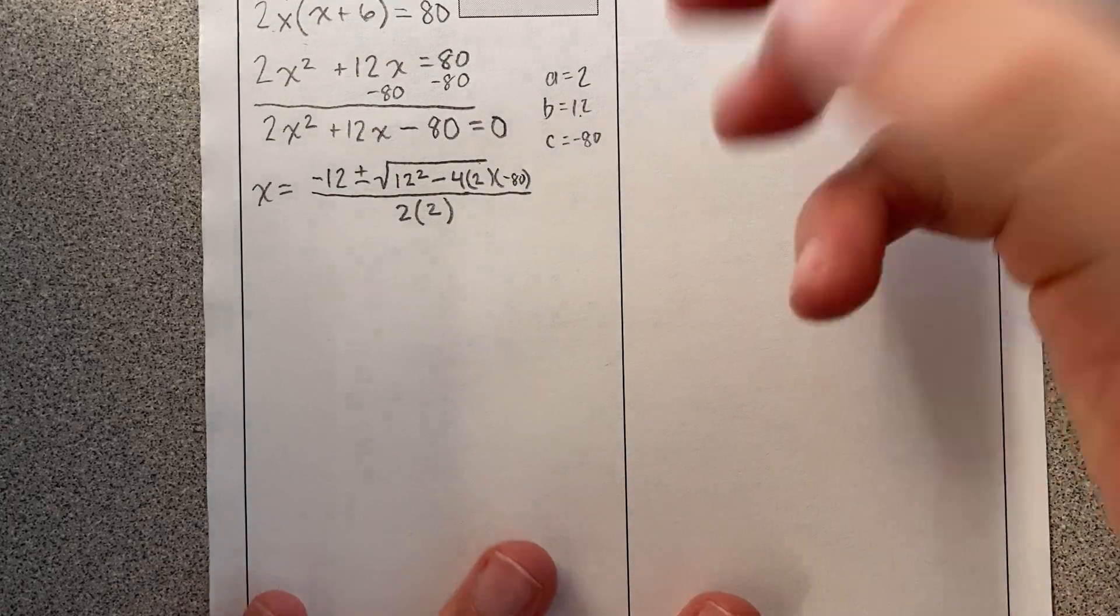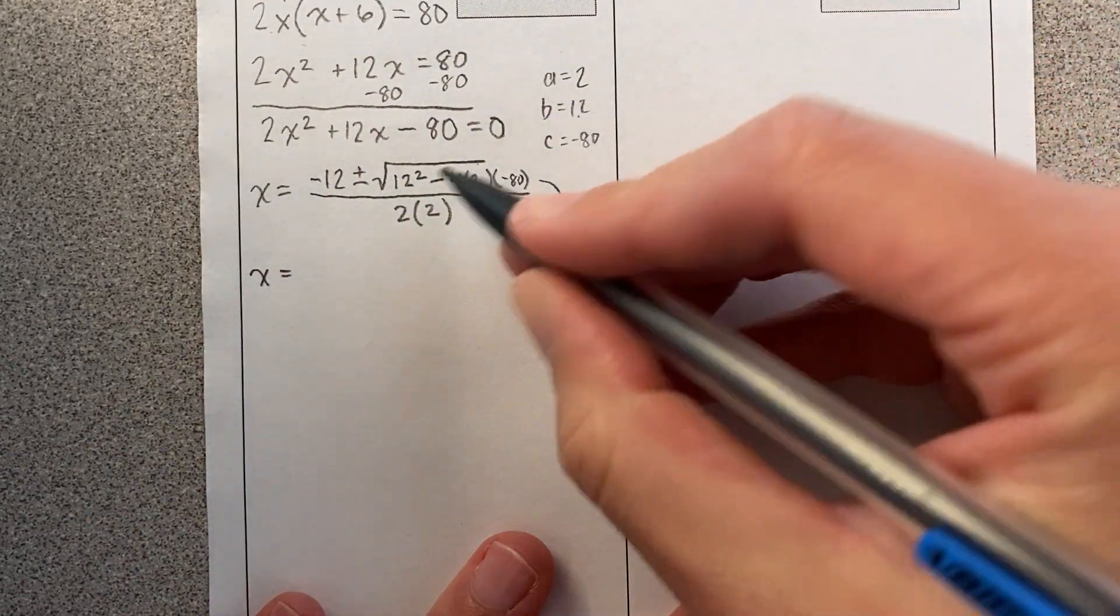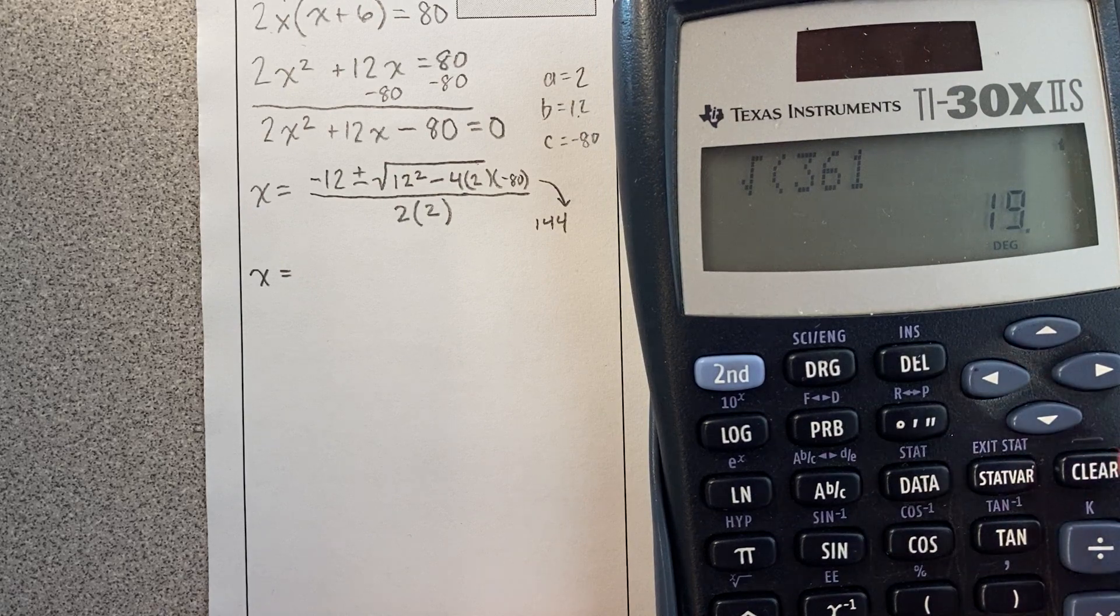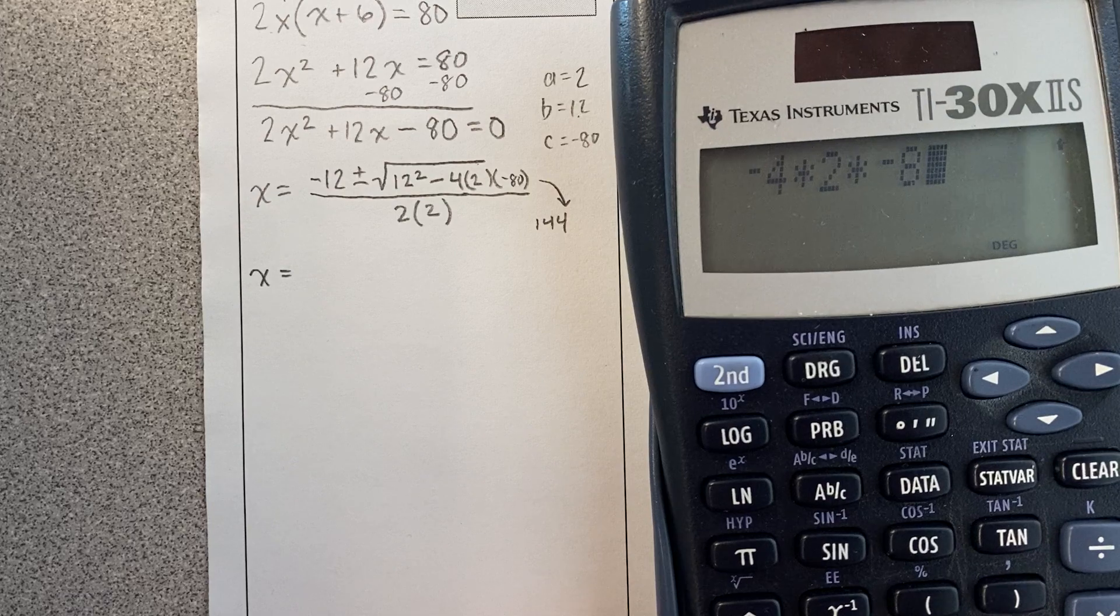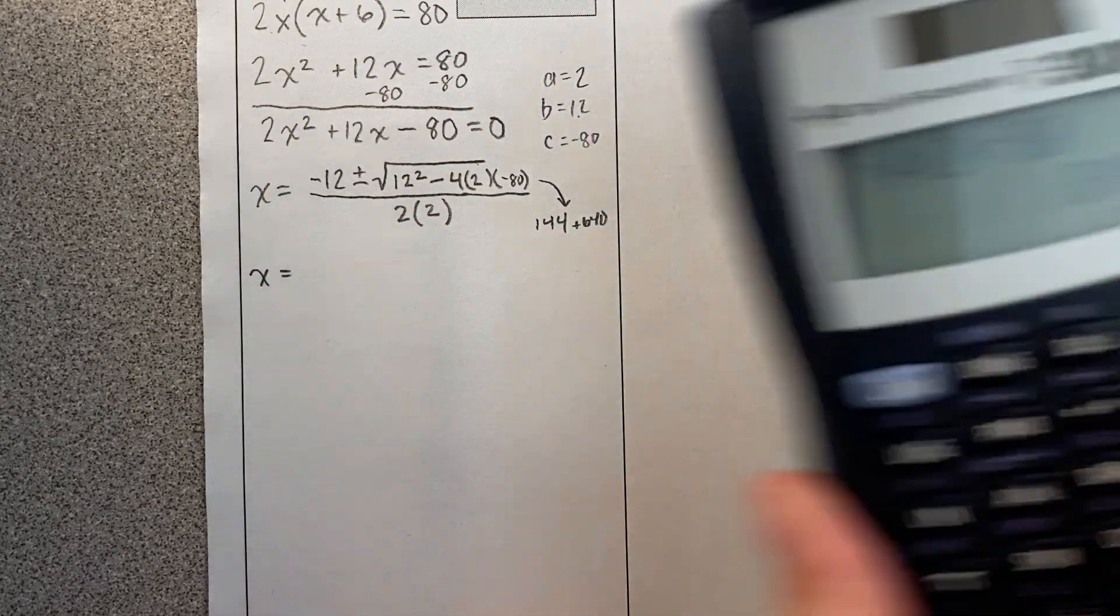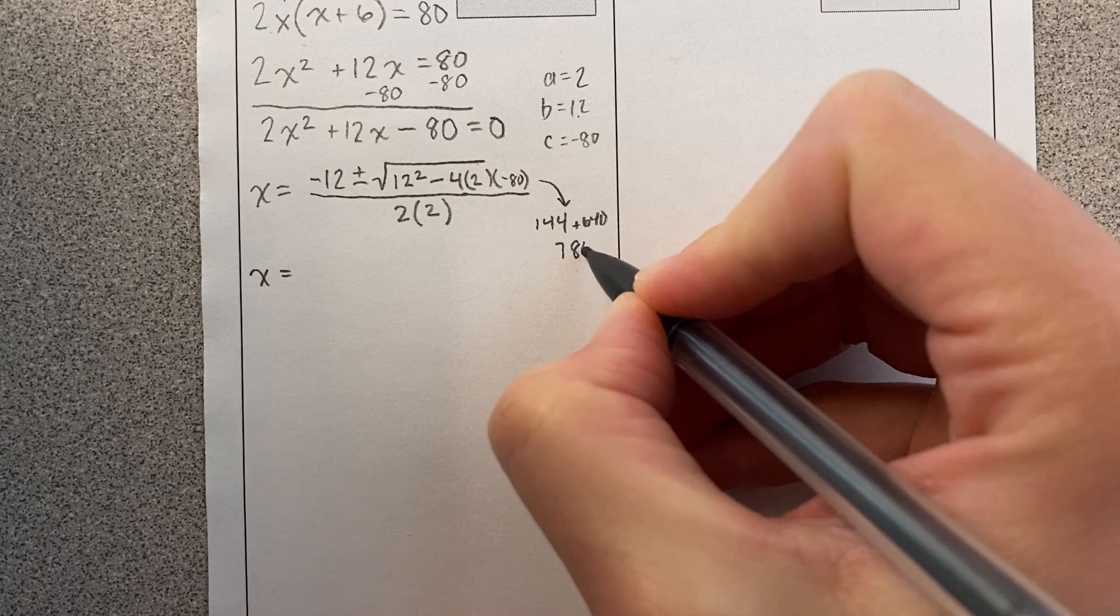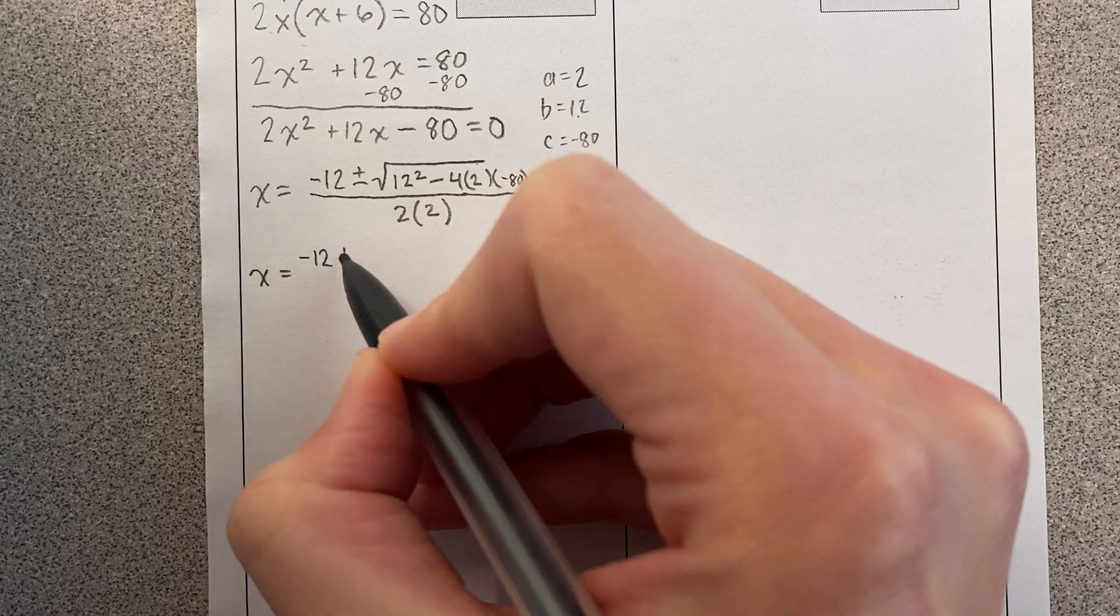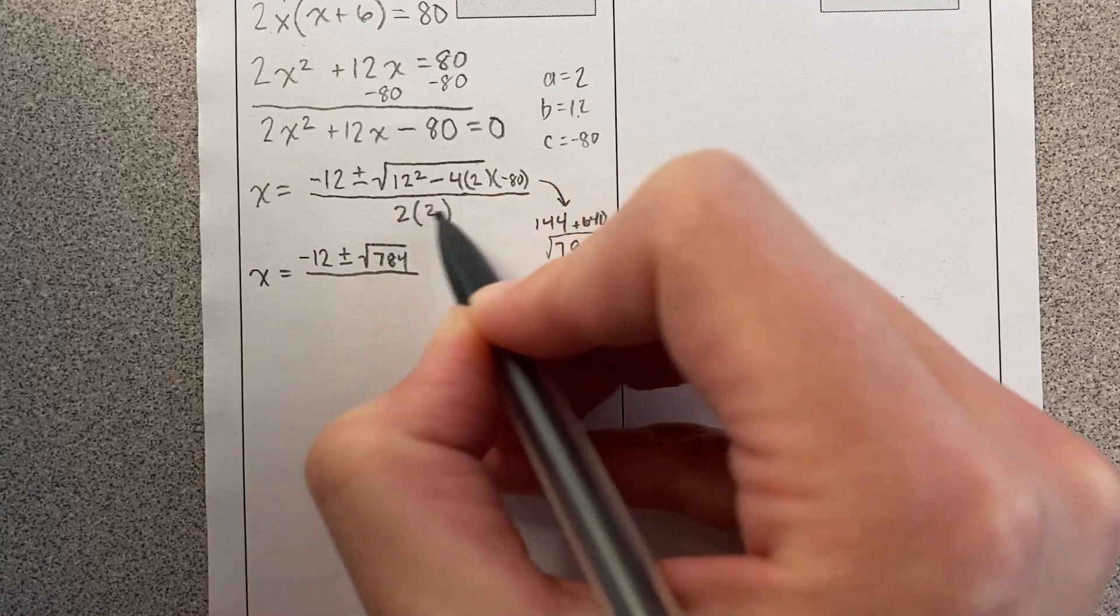Okay, let's move up here. Let's take this guy out to the side and do some simplifying. Okay, so this is 12 squared, so I know that's 144. And then this is negative 4 times 2 times negative 80. And I know this is going to be a big number, 640. And it's positive 640. Okay, I'm going to go ahead and add that to 144. I get 784. Okay, now remember, this is the square root of 784.